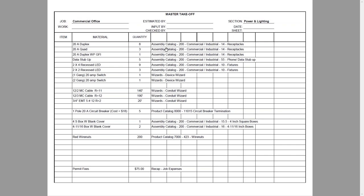When doing a material takeoff for Red Rhino, you won't see assembly catalog information by default — it was added here so you know where to find each assembly. For example, here's a 20-amp duplex with eight of them on the drawing. This is a little different than you're used to, because when you input receptacles in Red Rhino using assemblies, it shows all the parts and pieces needed: the box, the plaster ring, the plug, the plate, etc.